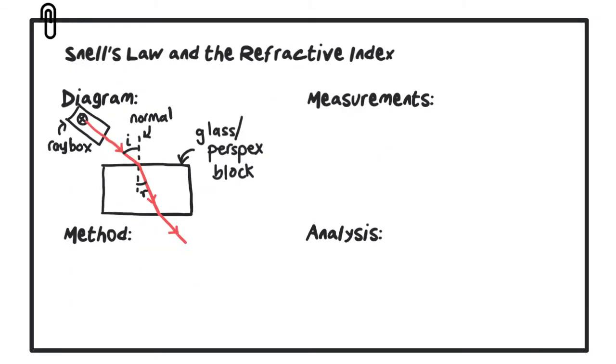To summarize this experiment, there are four key areas that we need to look at. First of all, we have the diagram. Remember that in the exam, you need to clearly draw your diagram and label any pieces of apparatus and any key measurements that you need to take. So in this case, we have the ray box and we have a ray of light going towards our glass or perspex block, and you'll notice that I've also labeled on there the normal, the angle of incidence, and the angle of refraction. Make sure those angles are labeled between the ray and the normal.